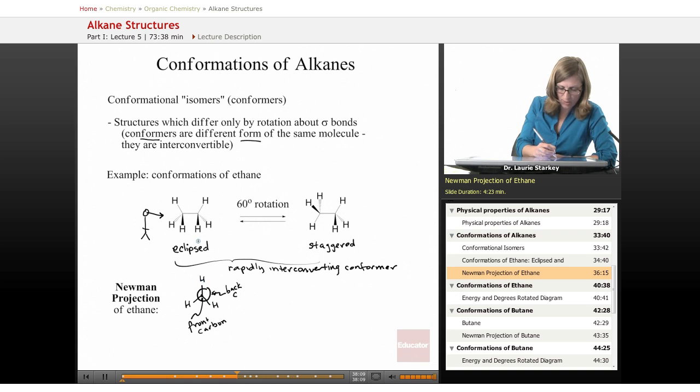And the back carbon in this eclipsed conformation, I mean, we recognize that the hydrogen, the back hydrogen is exactly behind the front hydrogen. But what we do is we tilt it just a little tiny bit so that we can see it, so it's visible.